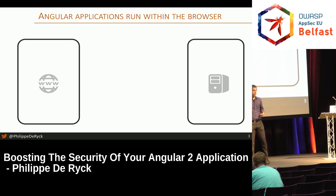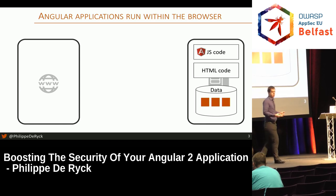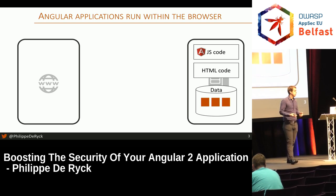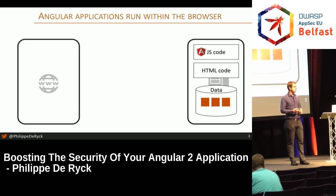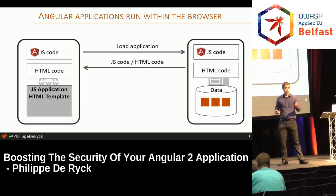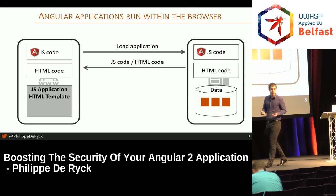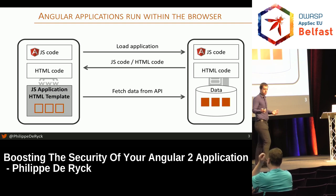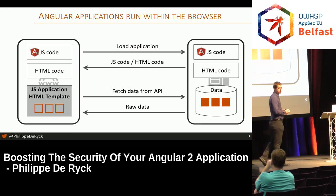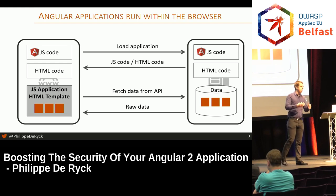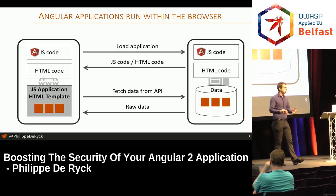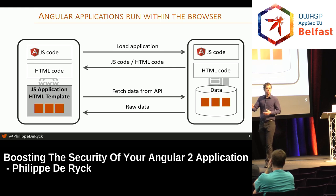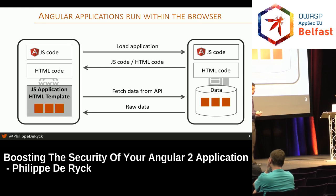Essentially, very briefly, an Angular application: you have static HTML, you have static JavaScript on the server, you load it in the browser, you bootstrap the application, you have a template with data binding, and data will be fetched from an API and injected into that template. That's essentially, in a nutshell, what an Angular application is or how it works under the hood. Of course, there's a lot more technical stuff which you don't need to know for this talk.